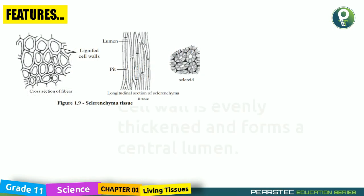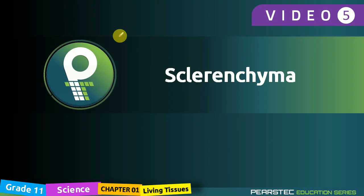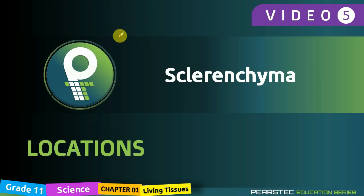Another feature of Sclerenchyma: the cell wall is evenly thickened and forms a central lumen. This is a distinctive feature specific to Sclerenchyma — the cell wall is evenly thickened and forms a central lumen.